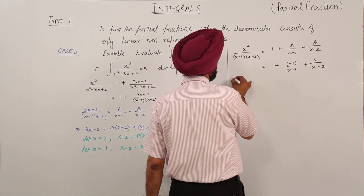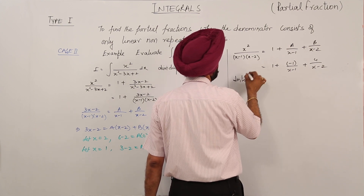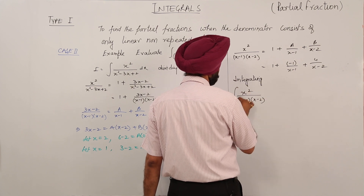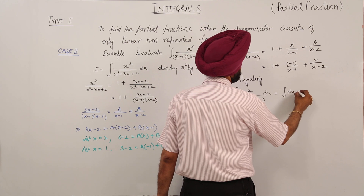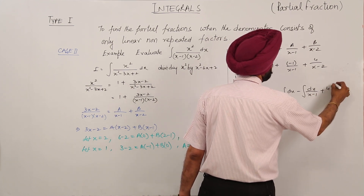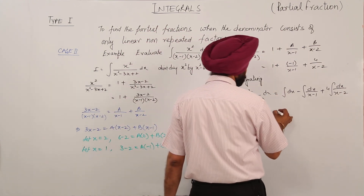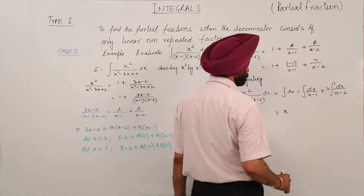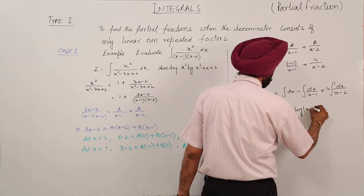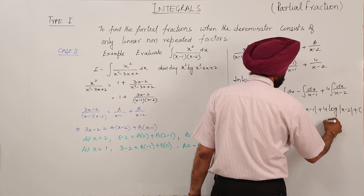Now integrating x² divided by (x - 1)(x - 2) dx, we integrate each term separately. The result is x minus log|x - 1| plus 4·log|x - 2| + C, and this is the final answer.